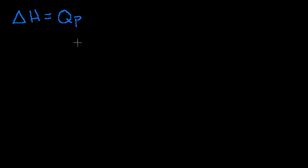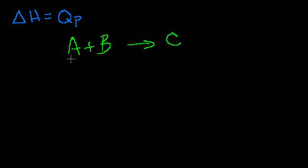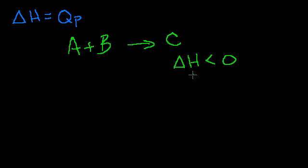So if you have a reaction, let's say A plus B yields C, and our change in enthalpy — the enthalpy in this state minus the enthalpy in that state — is less than zero, we know that this is exothermic. At constant pressure, change in enthalpy equals heat added to the system. If the heat added to the system is negative, we must be releasing heat — we're releasing energy.